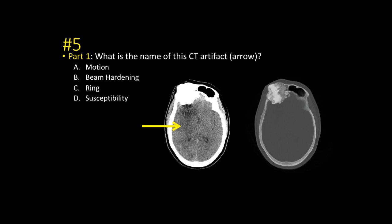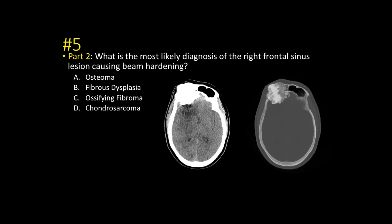Number five — another two-part question: what is the name of the CT artifact depicted by the arrow? There's a hyperdense lesion in the right frontal sinus causing beam hardening artifact. Part two: the most likely diagnosis of this right frontal sinus lesion is osteoma — you can tell by the pearly white high density. Fibrous dysplasia would be more ground-glass, ossifying fibroma has a lamellar calcification pattern, and chondrosarcoma has a ring-and-arc matrix.